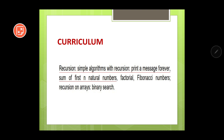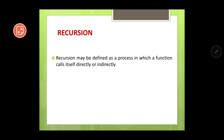Let's begin with the definition of recursion. Recursion may be defined as a process in which a function calls itself directly or indirectly. In the previous chapter we discussed working with functions in detail — within a function we can call another function, and if a function calls itself repeatedly, that is recursion. The meaning of 'directly' and 'indirectly' will be clear in the upcoming slides.